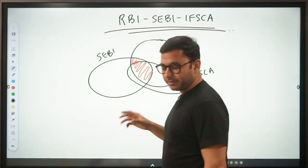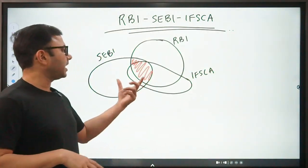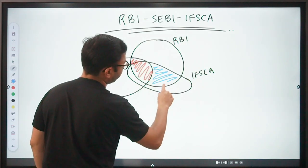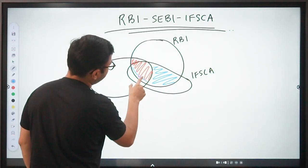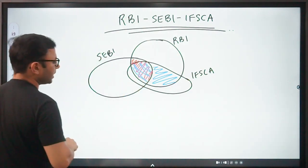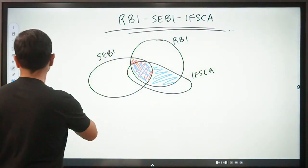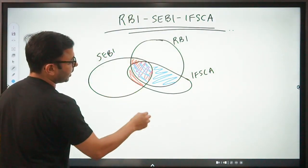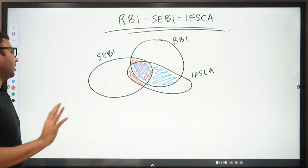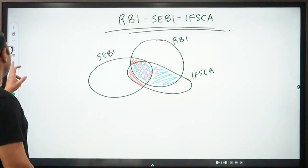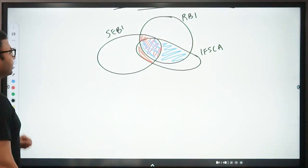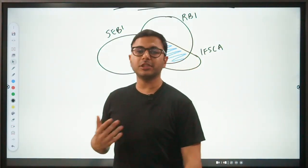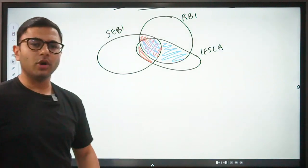Then we have the third circle which is of IFSCA. Now this is IFSCA. Here the confusion increases because there are a lot of things which are overlapping with RBI as well as with SEBI, and there are a lot of subjects which are not overlapping. This is overlapping with RBI, this portion is also overlapping with RBI. At the same time, it is overlapping with SEBI as well. This area is also overlapping with SEBI, along with this entire area, and this area is separate.